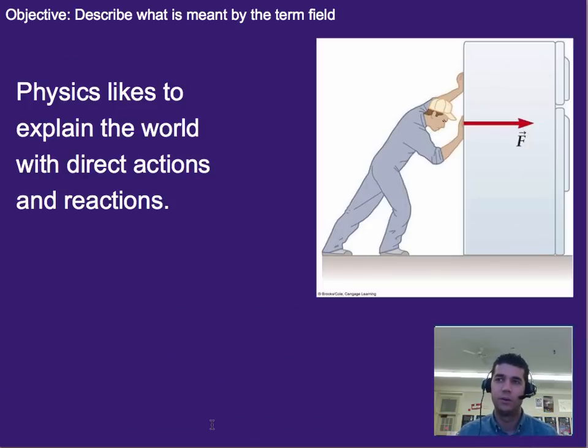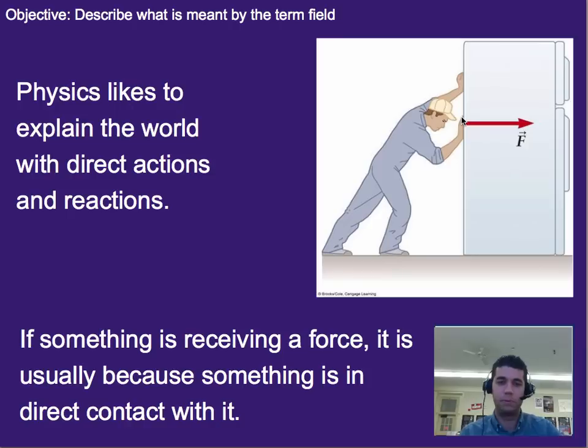Okay, so in physics, we tend to like it when we can see the direct cause of an action. In other words, we don't like it when things look like they happen by magic or something along those lines. So if we see a refrigerator begin to move, we like to see that there is something in direct contact with it that is causing it to move. Now that isn't always the case, but in general, we have things where if they're receiving a force, it's usually because something is in direct contact with it. That kind of just makes sense for most things.